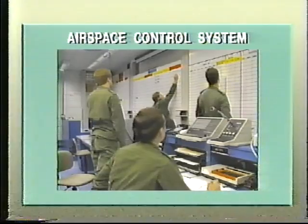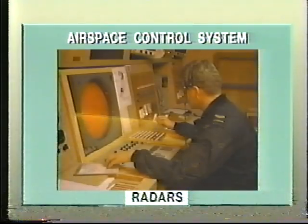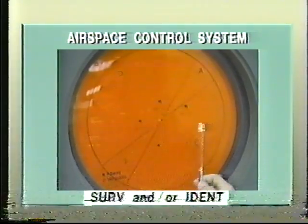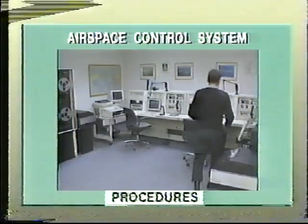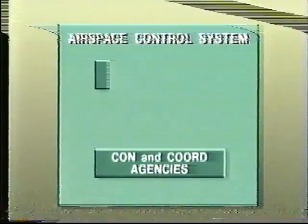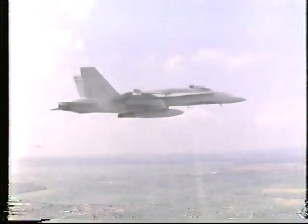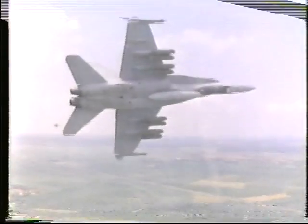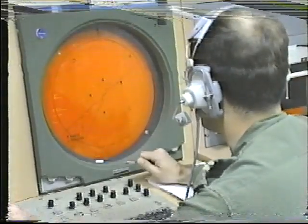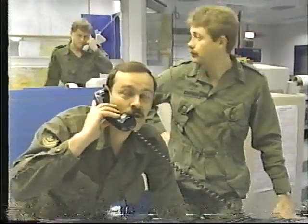The airspace control system consists of a number of coordination and control agencies, several early warning and control radars with their associated communication networks, surveillance and identification resources, and control procedures. Control and coordination elements are linked with each other and with the airspace control authority by communications and procedures to form an integrated system. The purpose of the airspace control system is to identify aircraft through procedural or electronic means, to alert the defenses when aircraft are identified as hostile, to control and coordinate all air defense resources, and to prevent the destruction of friendly aircraft.